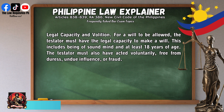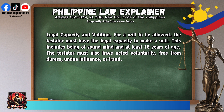For a will to be allowed, the testator must have the legal capacity to make a will. This includes being of sound mind and at least 18 years of age. The testator must also have acted voluntarily, free from duress, undue influence, or fraud.